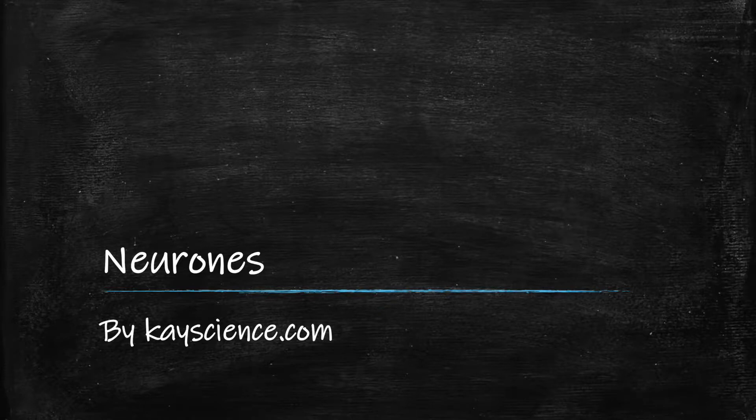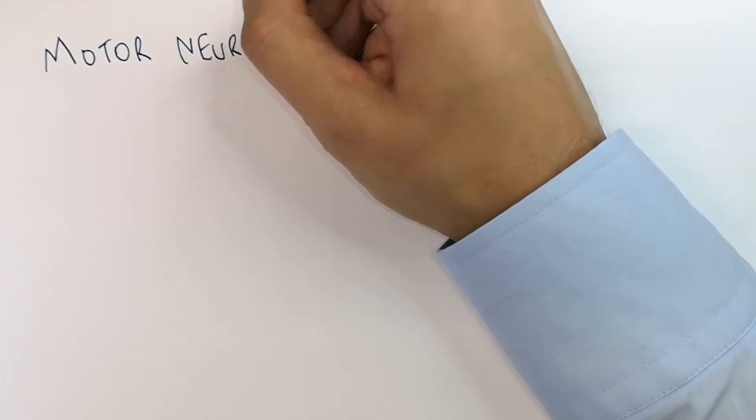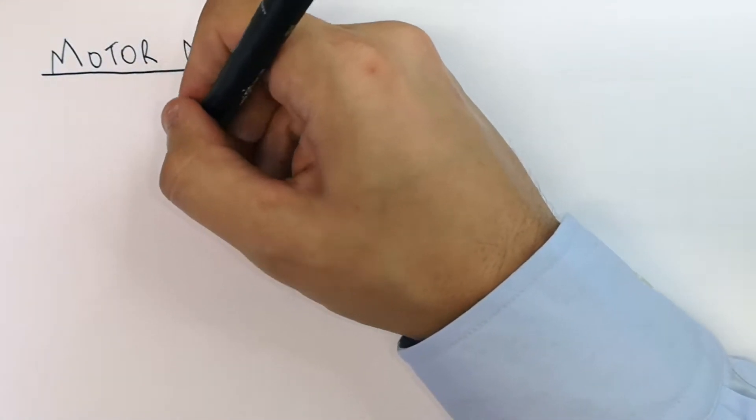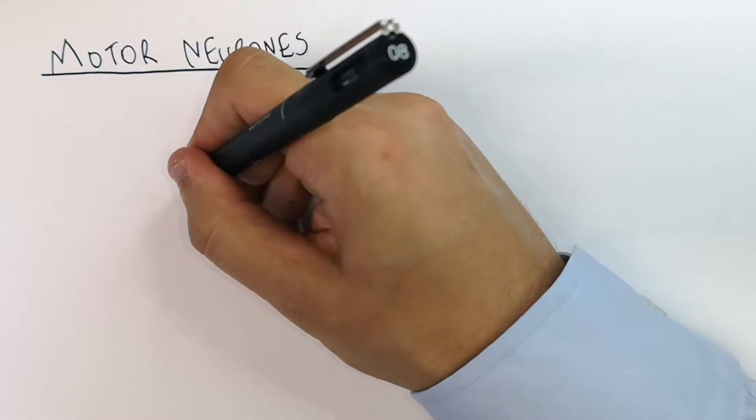The neurons by kscience.com. The motor neuron is the final neuron of the reflex arc which is connected to the relay neuron on one side and on the other side the effector.